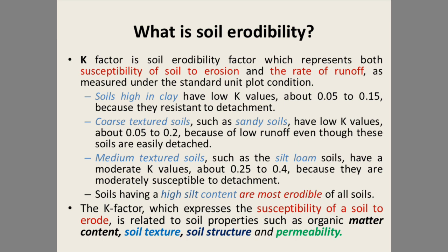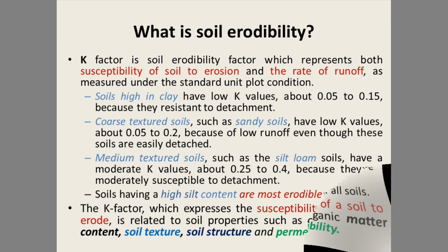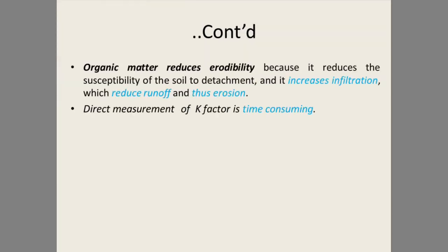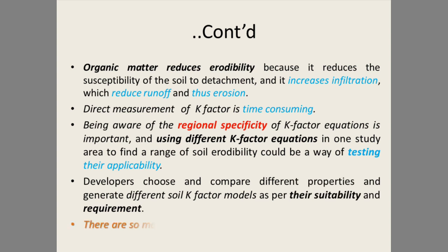The K factor, which expresses the susceptibility of a soil to erode, is related to soil properties such as organic matter content, soil texture, soil structure, and permeability. These four soil properties are highly related to the K factor. Organic matter reduces erodibility because it reduces the susceptibility of the soil to detachment, increases infiltration, and reduces runoff and erosion.